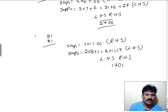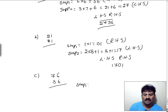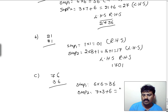Let us take one more example: 76 and 36. In step 1: 6 into 6 equals 36. In step 2: 7 into 3 plus 6 — that is 21 plus 6 equals 27. Finally, 2736 is the answer.